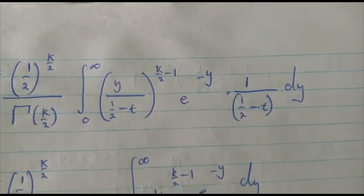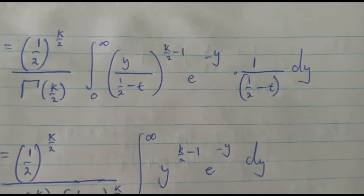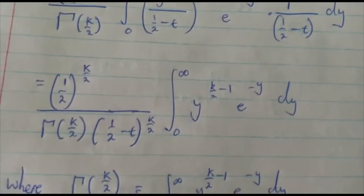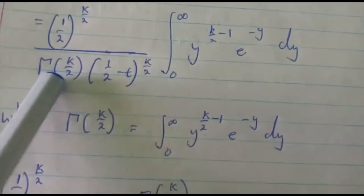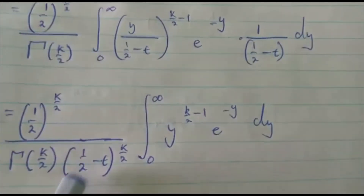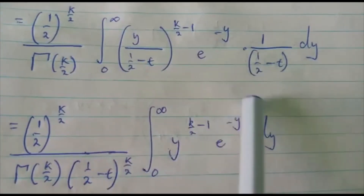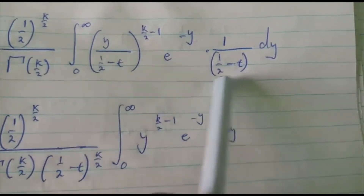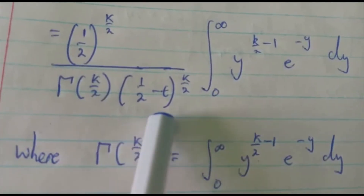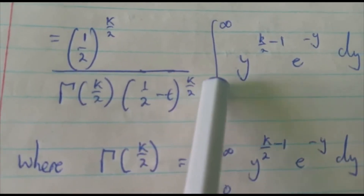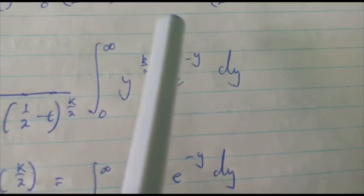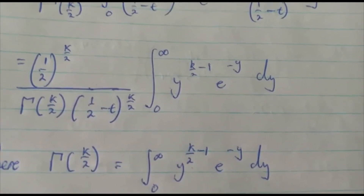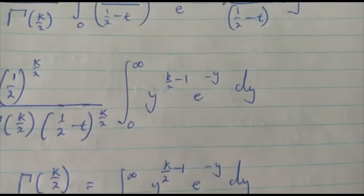From here we take (half minus t) outside the integral. Factoring out (half minus t) to the power k over 2 minus 1, and the one over (half minus t) from dx, they go outside, and we remain with (half minus t) to the power k over 2. Inside the integral we have y to the power k over 2 minus 1 times e to the power negative y dy.